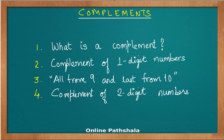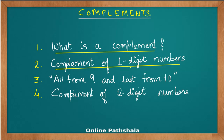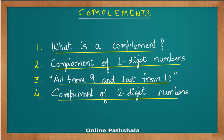In this video we are going to discuss a very important concept of complement. I will first discuss what we mean by a complement, then we will understand how to find the complement of one-digit numbers. Then I will introduce a very important rule known as 'all from 9 and last from 10,' which will be very helpful to find complements of numbers greater than one digit — applicable for any n-digit number. We will then find complements of two-digit numbers, and in the next video I will expand this method to cover any arbitrarily long digit number.